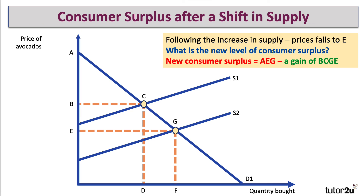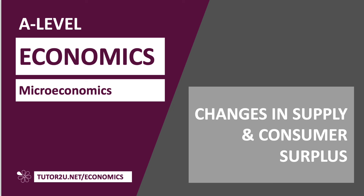That gain is shown by the trapezium B, C, G, E. Therefore, an increase in supply causes an increase in consumer surplus.